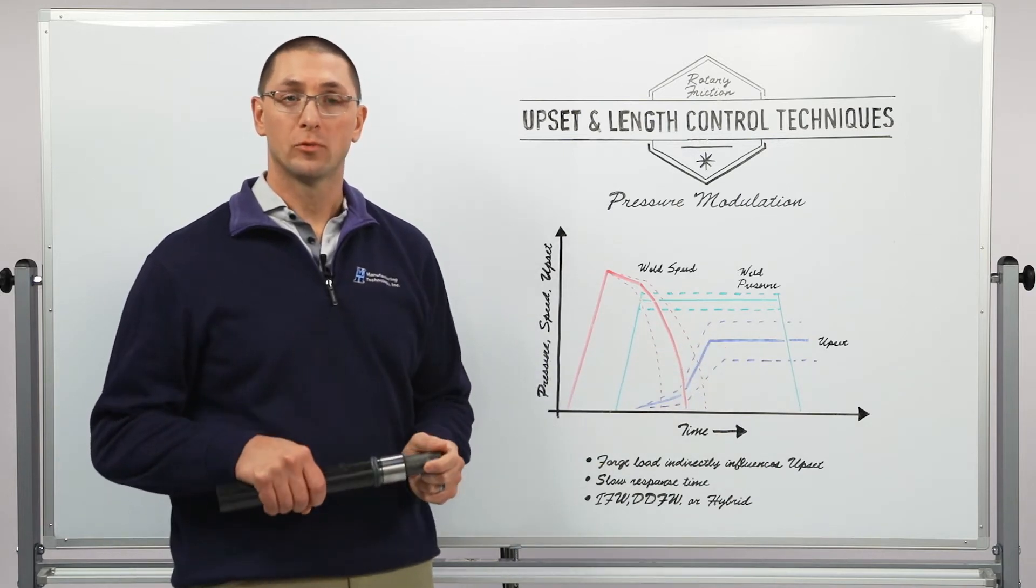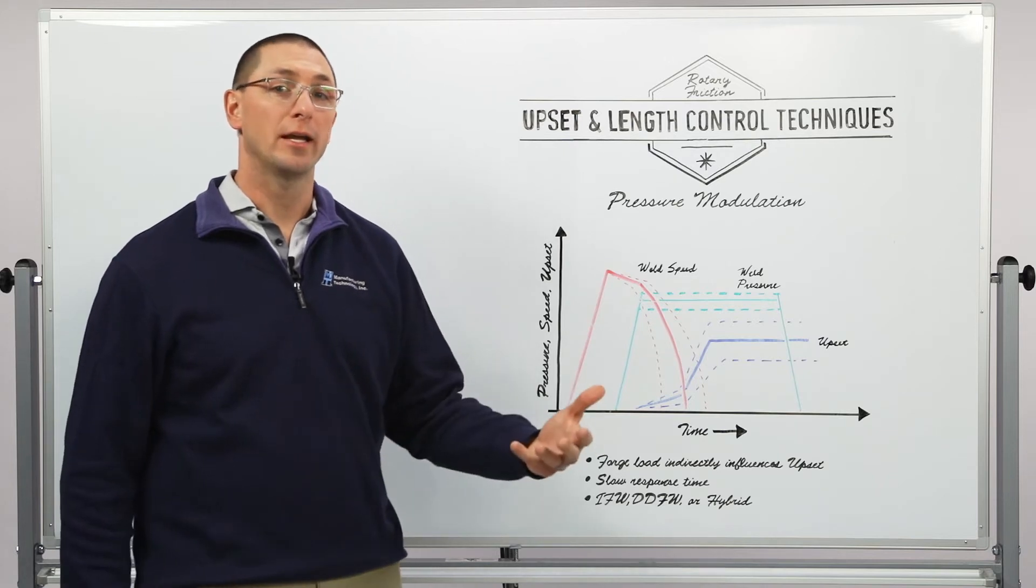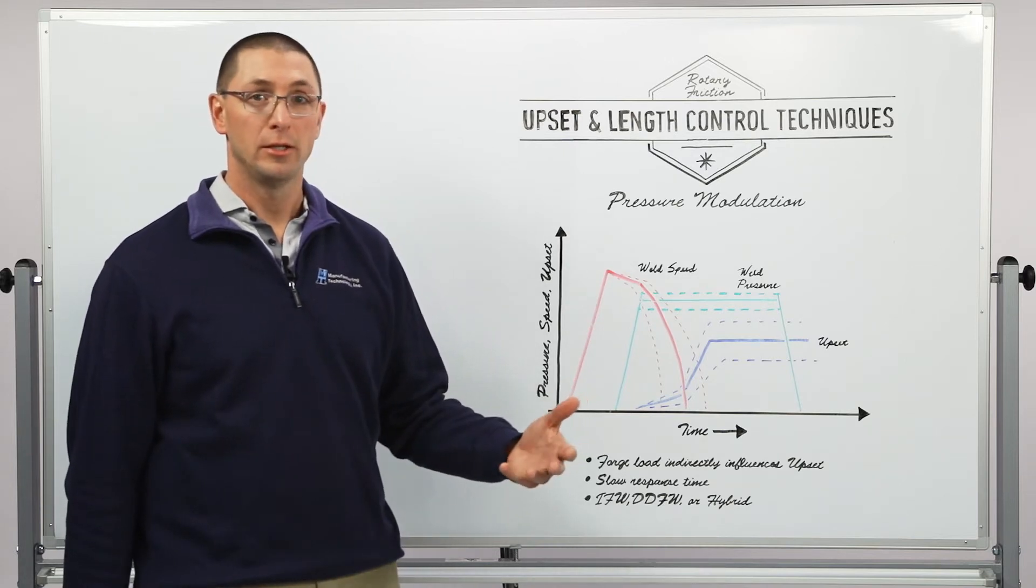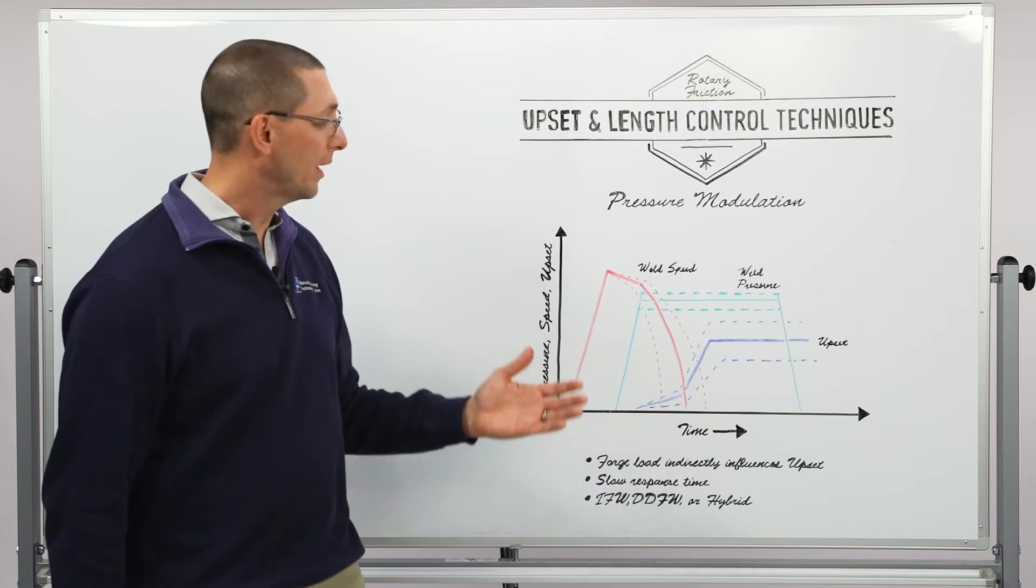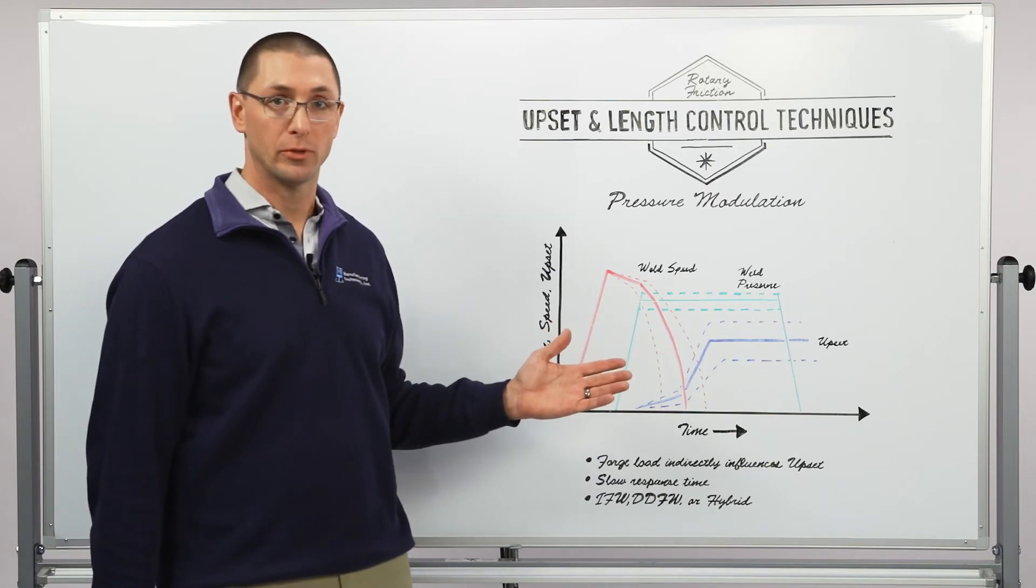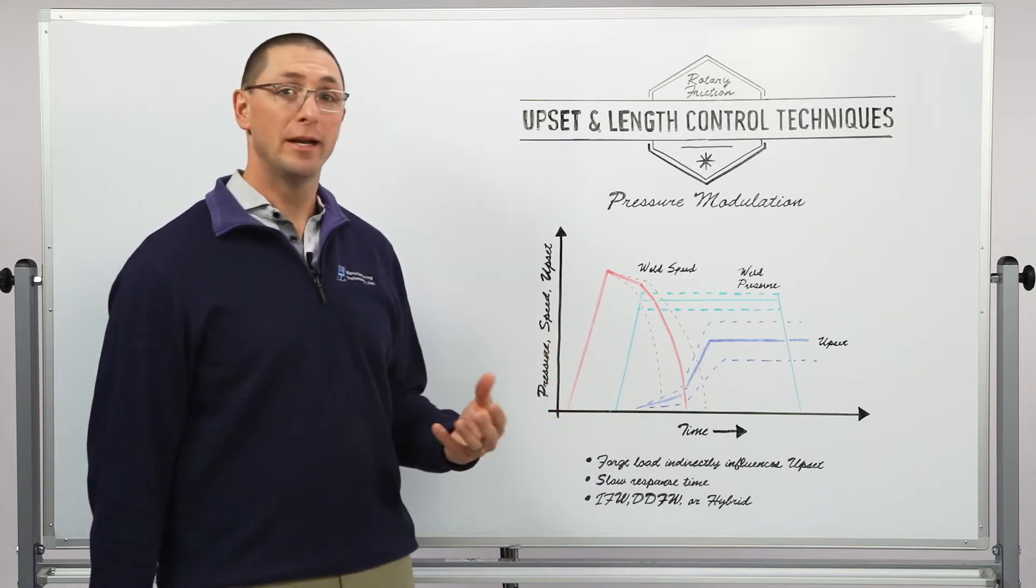Well, way back when, Brian Benn from Rolls-Royce decided that he could create an upset control technique using this same principle by closing the loop on that upset control. In order to do so, we need an error signal.